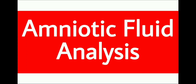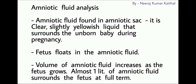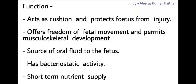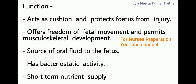Amniotic fluid is found in the amniotic sac. It is a clear, slightly yellowish liquid that surrounds the unborn baby during pregnancy. The fetus floats in the amniotic fluid. The volume of amniotic fluid increases as the fetus grows — almost one liter of amniotic fluid surrounds the fetus at full term.